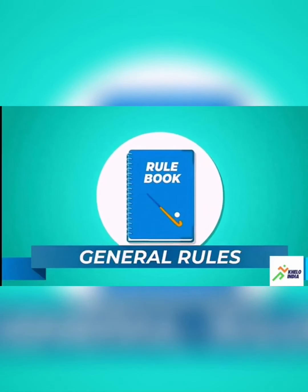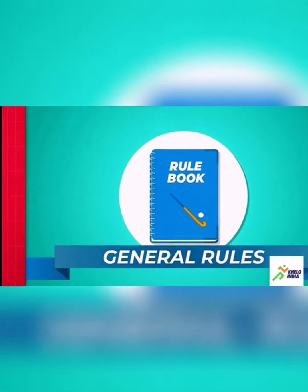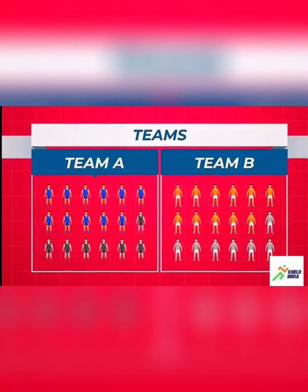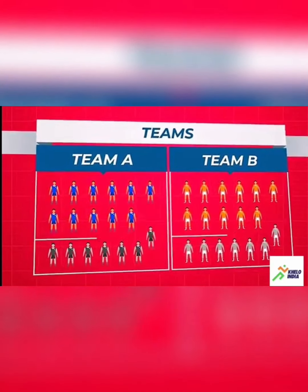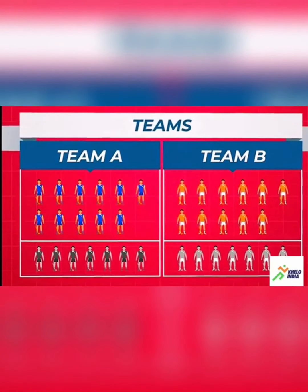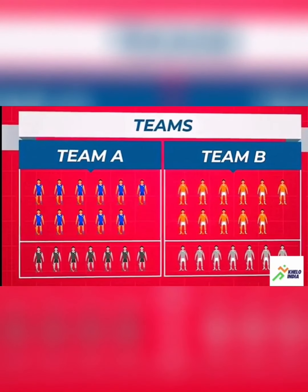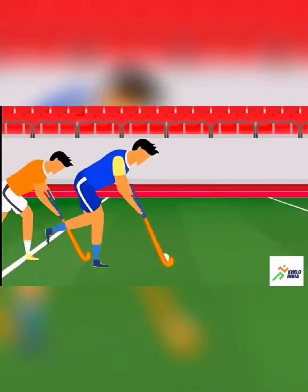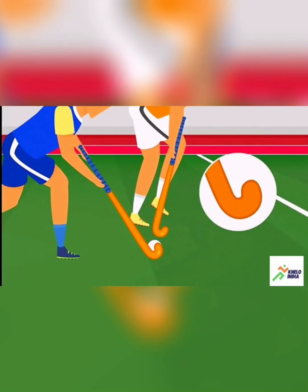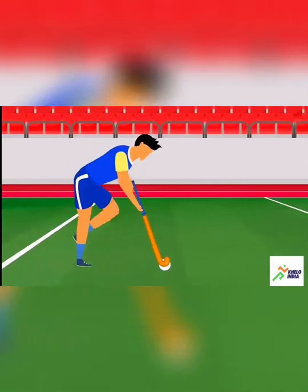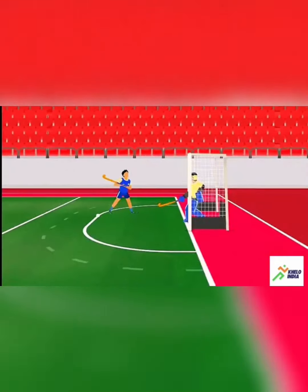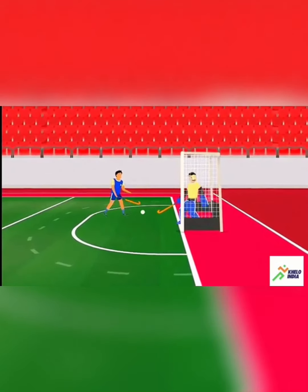There are basic rules in hockey. In a team there are 18 players. Out of those, 11 players take part on the field at one time and seven players are kept as substitutes. Every player has to use the hockey stick which is flat on its left side and round on the other side. If the team scores in the shooting circle then it is regarded as a goal.